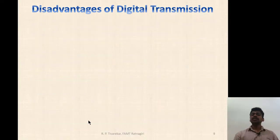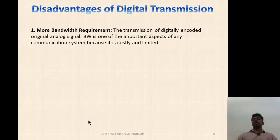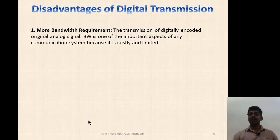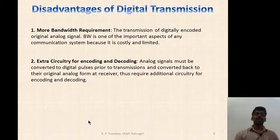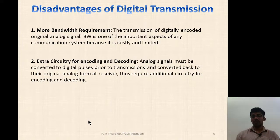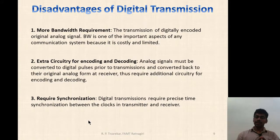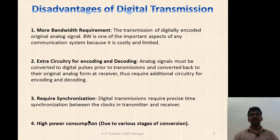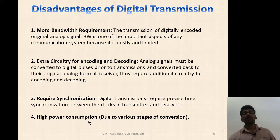In terms of disadvantages, the major one is bandwidth requirement. Digital transmission needs larger bandwidth than analog transmission, hence the cost will also be more. Extra circuitry for encoding and decoding is required, as we have a channel encoder and channel decoder for error detection and correction capability. It also requires synchronization of transmitter and receiver clocks — if that synchronization is lost, everything gets lost. High power consumption is another disadvantage of digital transmission.